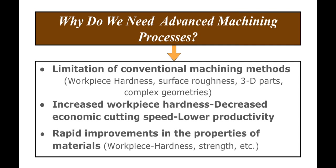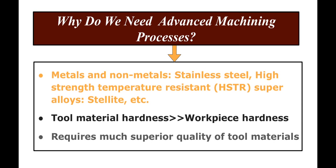There has been rapid improvement in the properties of materials used as work piece materials. Now both metals and non-metals are used as work piece materials, such as stainless steel, high-strength temperature-resistant super alloys. When tool metal hardness is very close to the work piece material hardness, you require much superior quality of the tool metal.